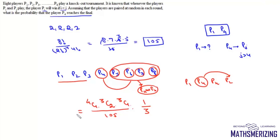So this required probability will be 4 into 3 into 3, 36 divided by 105 into 3. Now this is 12 and this is 4 by 35. So the probability that P4 reaches final, it is 4 by 35 and that is the answer to this question.